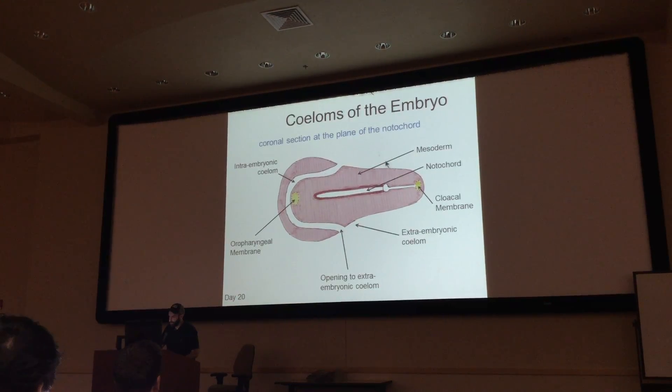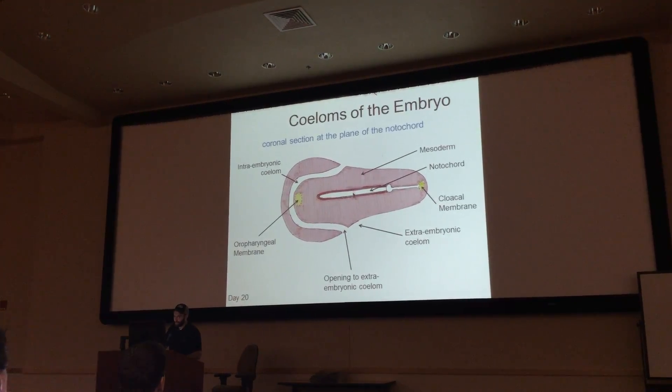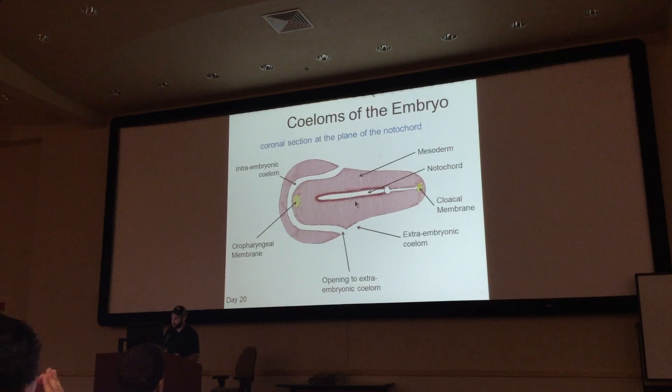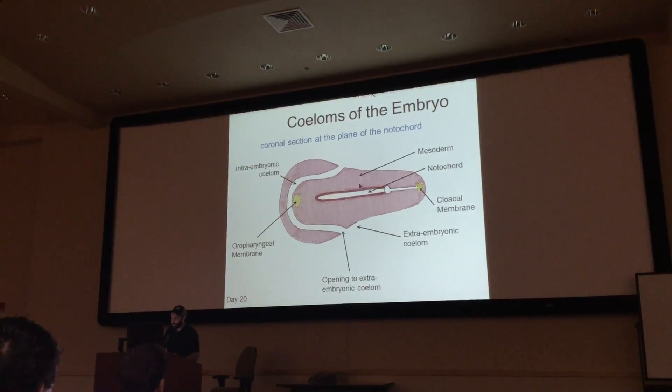This is supposed to be a top-down view of your mesoderm at the very beginning of where we started — the very first view we ever had when the umbilical ring was about to start forming.